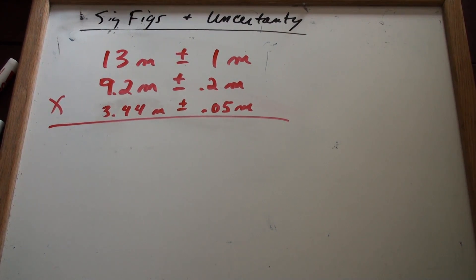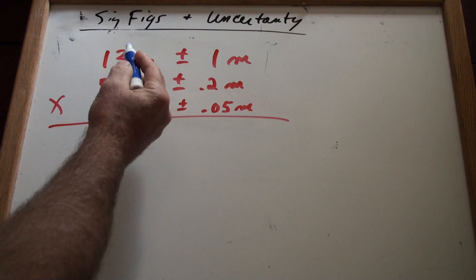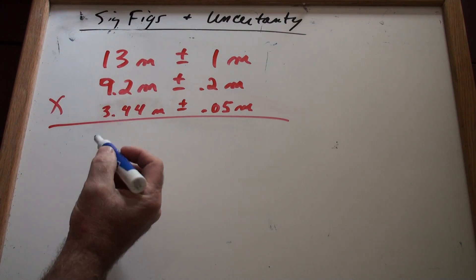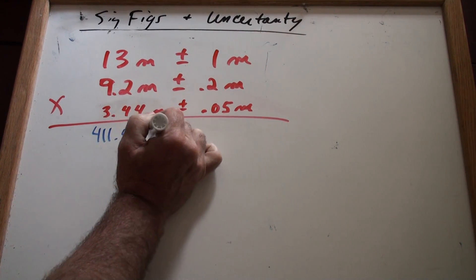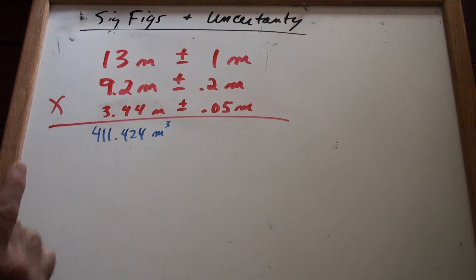Okay, so according to that math packet that I put on Angel, you should have done this. Here goes. You should have multiplied these three numbers together and your calculator probably said something like 411.424 cubic meters, but you can't leave it like that because of sig figs.